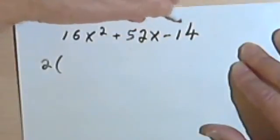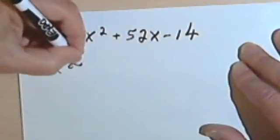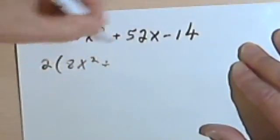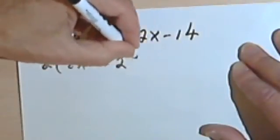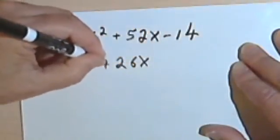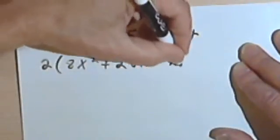So factoring a 2 out of this polynomial, I'm going to get 2 times 8x squared plus... let's see, 2 into 52 is 26. That's 26x. And 2 into negative 14 is negative 7.